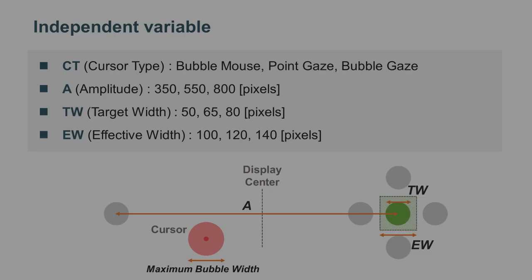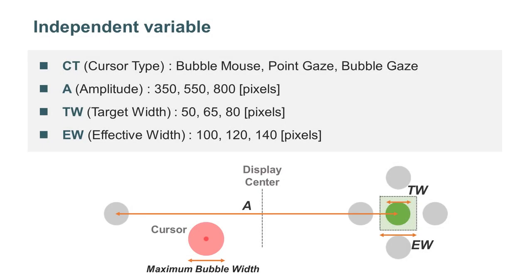There were four independent variables: cursor type, amplitude, target width, and effective width. The independent variables A are 350, 550, and 800 pixels.